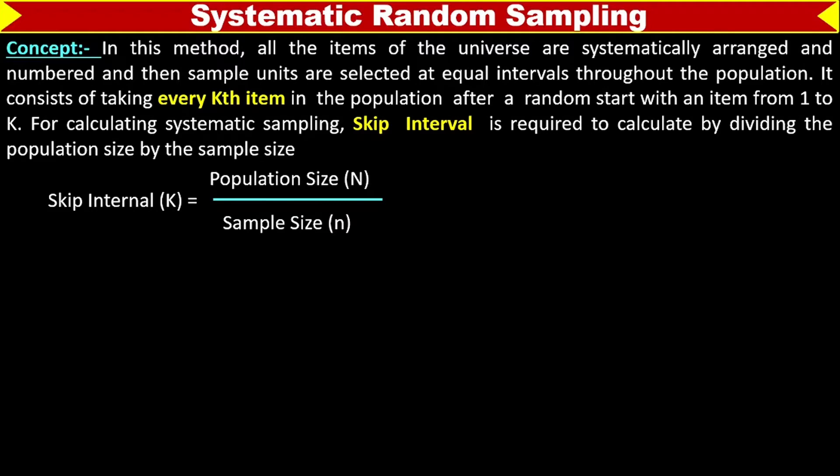Systematic random sampling is the method in which we select units at equal intervals after a systematic order. How many intervals depends on the population size and the sample size. Population size divided by sample size gives us the interval, and units can be selected based on this difference between intervals.